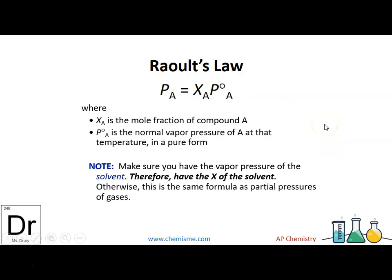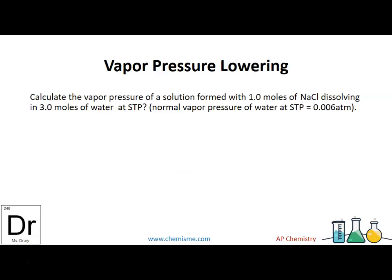A represents the solvent, so the mole fraction has to be of the solvent, because we're looking at evaporating — not the solute — especially because a lot of solutes tend to be solids or gases, not liquids. For example: calculate the vapor pressure of a solution formed when 1 mole of sodium chloride is dissolved in 3 moles of water at STP, where the normal vapor pressure of water is 0.006 atm. The mole fraction of the water, or solvent, is 3 out of a total of 4. That gives us three-fourths times 0.006, and the new pressure is 0.0045 atm. The pressure decreased as you added solute — it went from 0.006 to 0.0045. Make sure you have your solvent as your numerator.